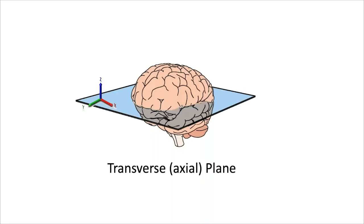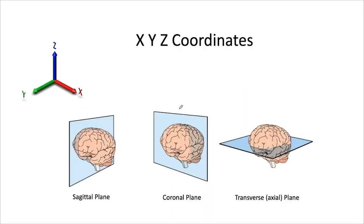In the transverse plane, we are moving in the z-direction, from down to up. With this x-y-z coordinate system, we should be able to define any specific area in the brain by assigning x, y, and z values.